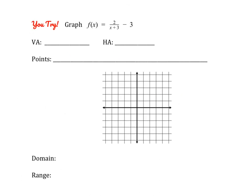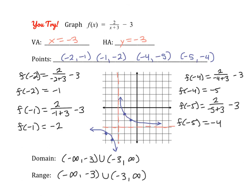Here's the last example for today's video. Please pause to try it on your own, and we'll check answers in a few seconds. The graph shifts left 3 and down 3, so the vertical asymptote is at x equals negative 3 and the horizontal asymptote is at y equals negative 3. The graph falls in the upper right quadrant and the lower left quadrant. The domain is everything except negative 3, and the range is everything except negative 3. Thank you so much for watching.